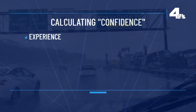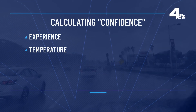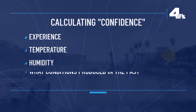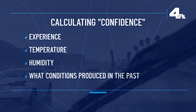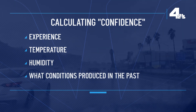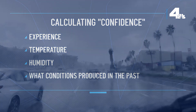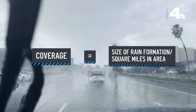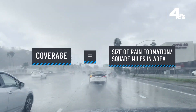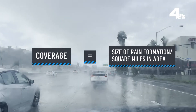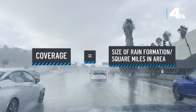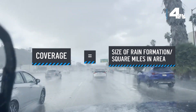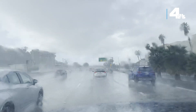Forecasters determine confidence using their experience in looking at factors like temperature, humidity, and what a given set of conditions has produced in the past. The coverage is determined by dividing the total number of square miles in an area by the square miles in the rain formation.